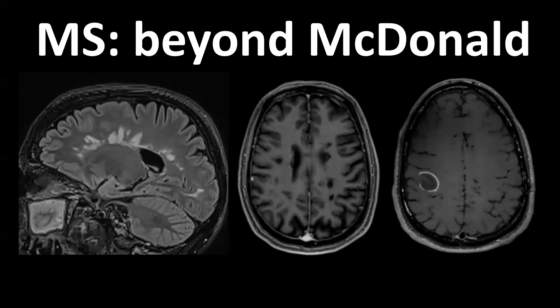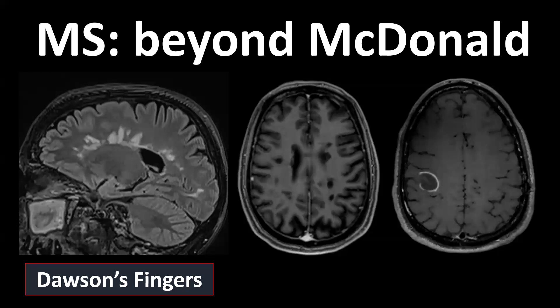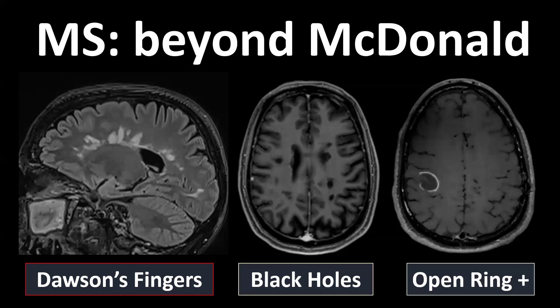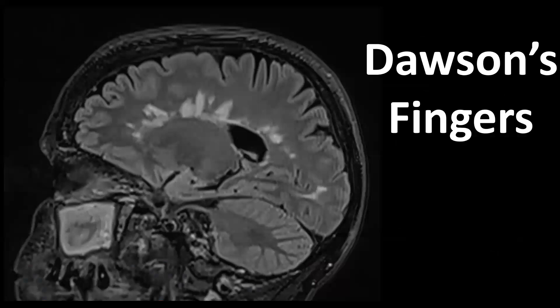There are situations where there is no clinical suspicion of multiple sclerosis, but signs can still be present that should make you think MS. Those are: Dawson's fingers, black holes, and the open ring or horseshoe enhancement sign. Let's look at Dawson's fingers — those are periventricular white matter lesions.